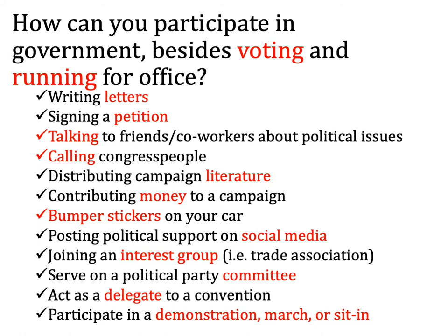Now this is where we get to our first quiz. It's not going to be multiple choice — what I'd like you to do is email me your number from this list. Of the 12 things you can do besides voting and running for office, just email me how many you have done. It can be zero, it can be 12, or anything in between. You're not going to be graded on your number — I'm just curious about your level of participation. My number is 12; I have done every single one of those things. Send it to me by the end of the unit, November 1st.